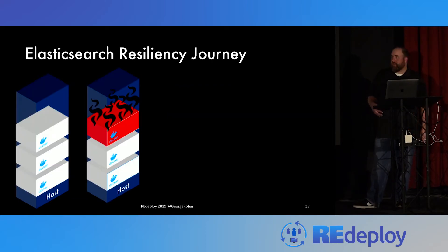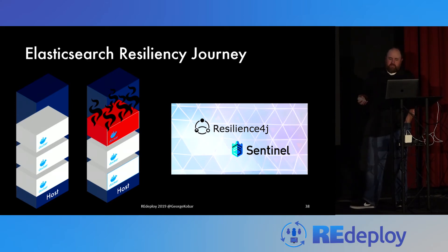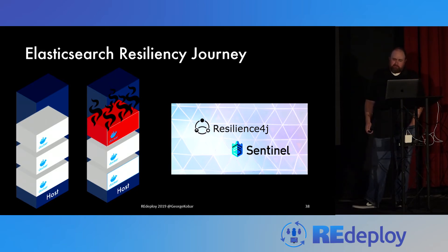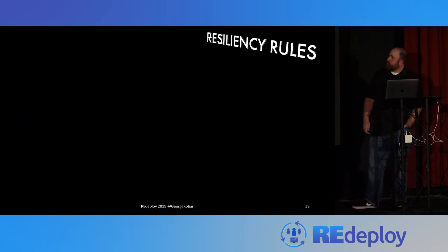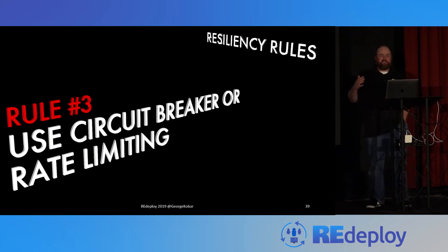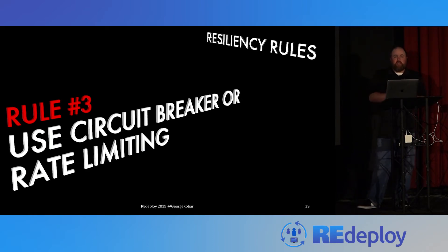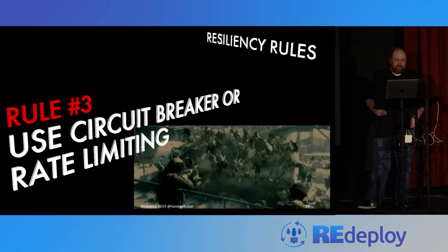Circuit breakers and rate limiting across microservices is also available. Resilience4J and Sentinel are great tools to help with circuit breaker or microservice architectures, ensuring rate limiting or circuit breaking across those systems. Resiliency rule three: use circuit breakers or rate limiting so your system can take corrective action, temporarily pause or stop, and report on that. It was very helpful in the Elasticsearch journey to prevent a single user from bringing down a whole set of clusters. Here's another zombie pic.